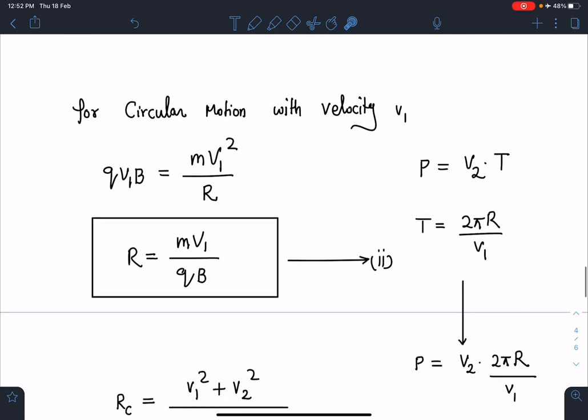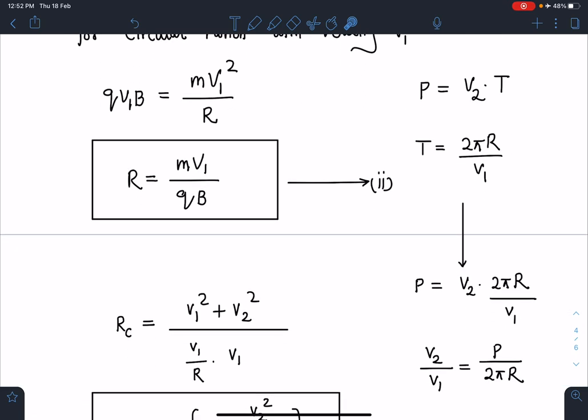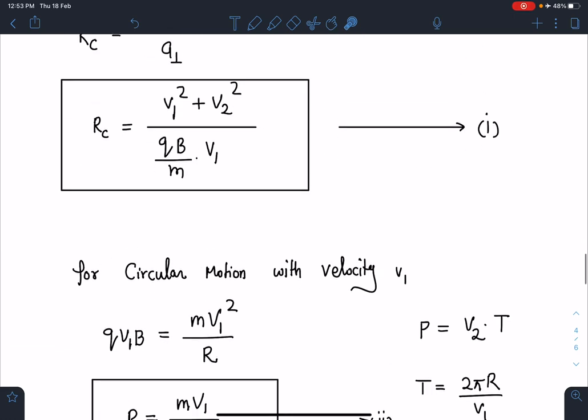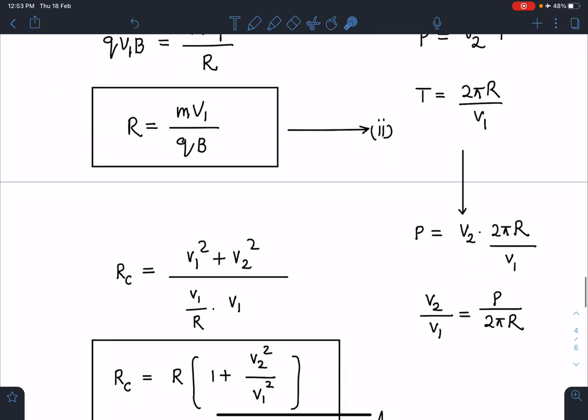When I combine these two equations, I'll be substituting the value of qB/m in this expression. The qB/m value comes as v₁/R. So in the expression of radius of curvature, I am going to get (v₁² + v₂²) divided by v₁/R, which is v₁² by R.